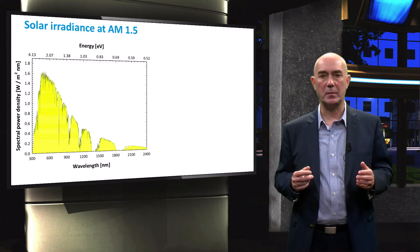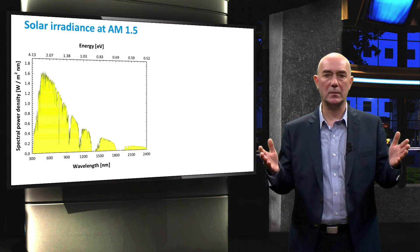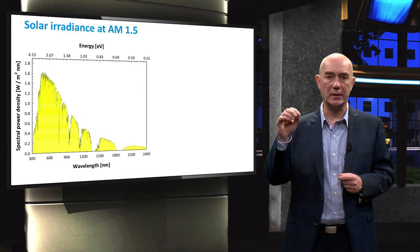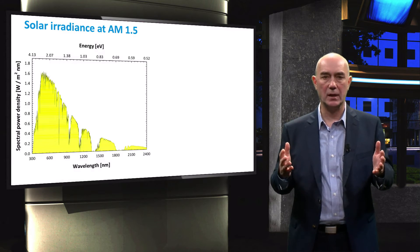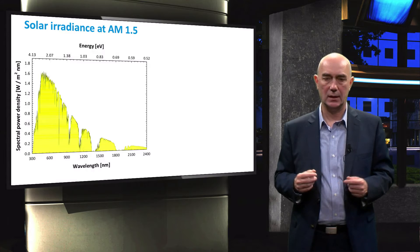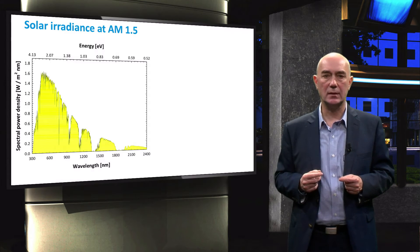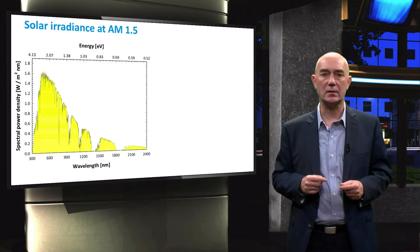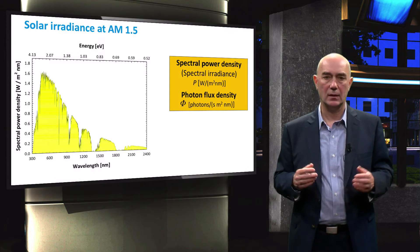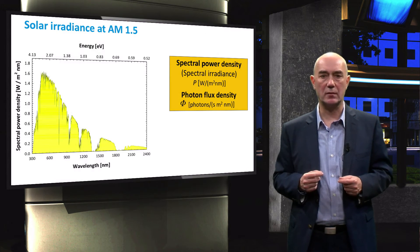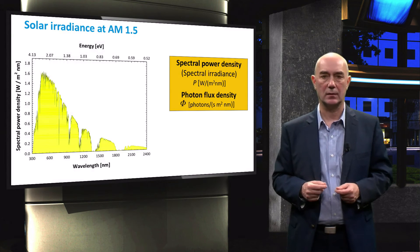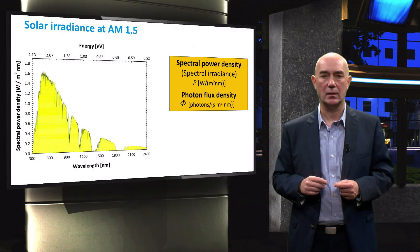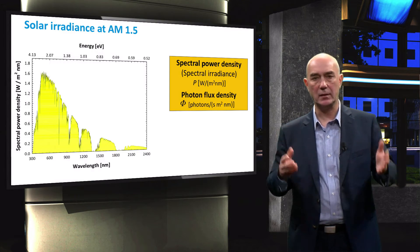The AM1.5 solar spectrum is used to determine the conversion efficiency of a solar cell. In this figure, you can see the spectral power density of the AM1.5 solar spectrum as a function of wavelength. The unit of spectral power density is watts per square meter per nanometer, and the wavelength is represented in nanometers. We usually use two parameters to describe the spectral properties of incident light: spectral power density — often also referred to as spectral irradiance — and photon flux density.